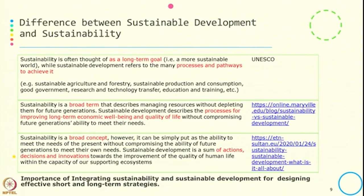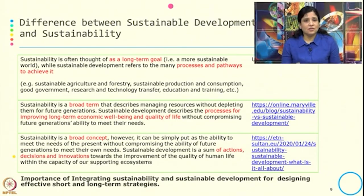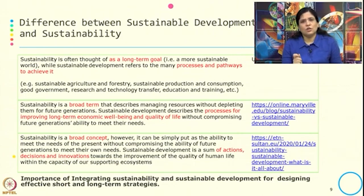The first difference is from UNESCO: sustainability is often thought of as a long-term goal — a more sustainable world — while sustainable development refers to the many processes and pathways to achieve it. So sustainable development talks about processes and pathways such as sustainable agriculture, sustainable forestry, sustainable production and consumption, good governance, research and technology transfer, and education and training.